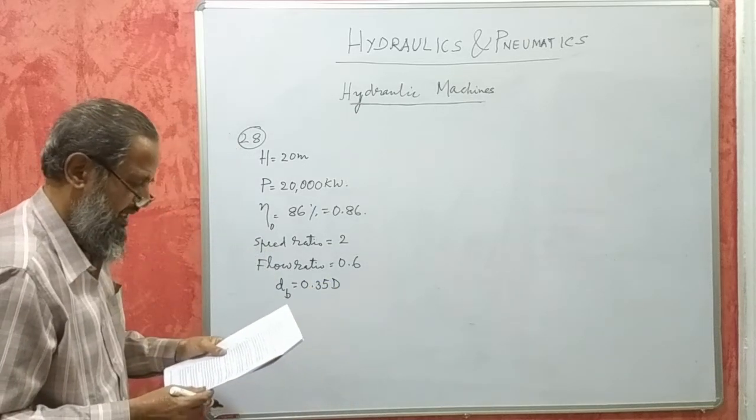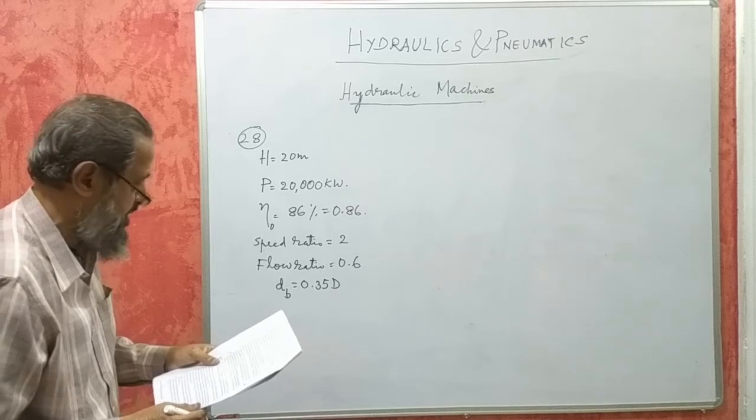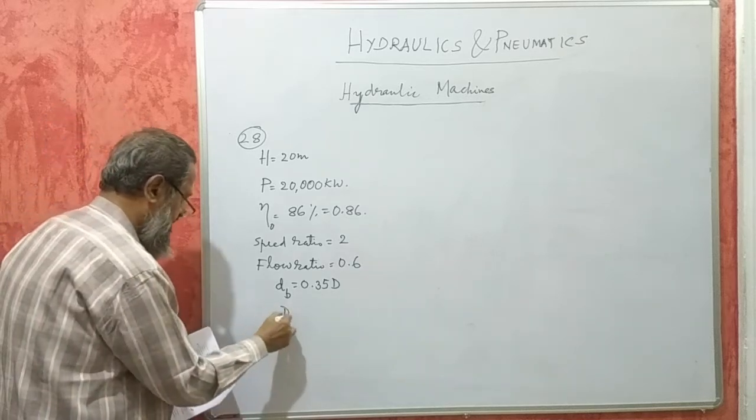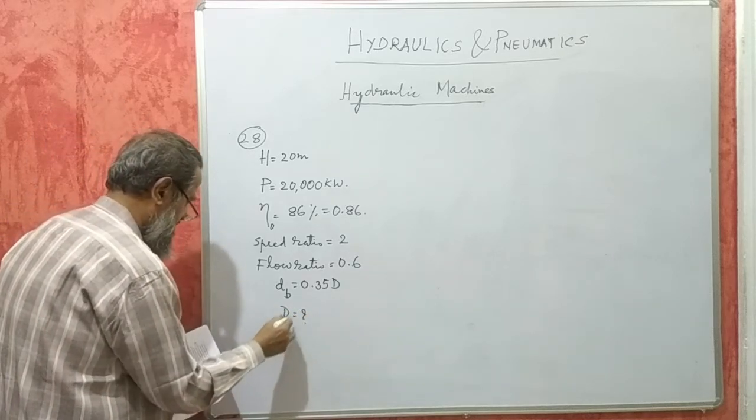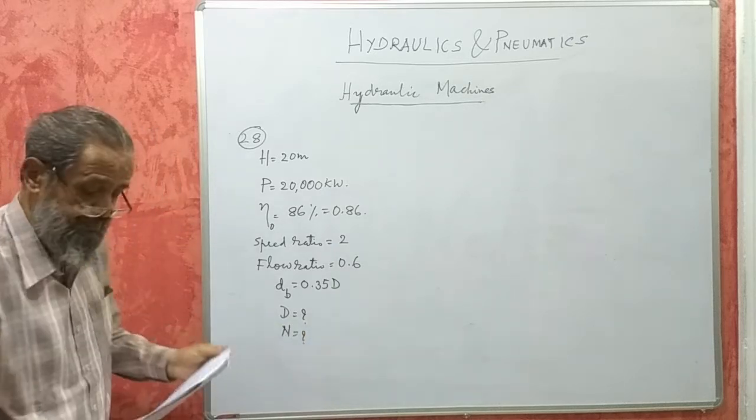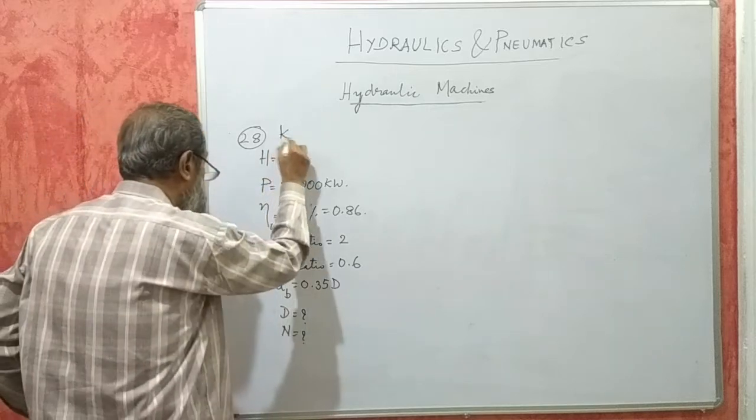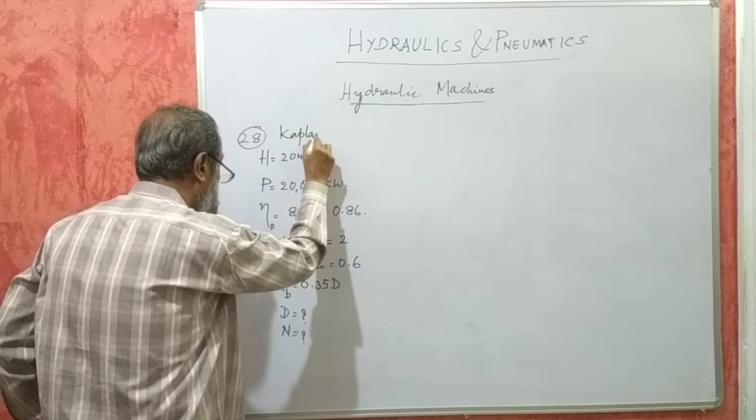Find the diameter and speed of the turbine. Find diameter of the wheel and speed of the turbine. This problem is on Kaplan turbine.